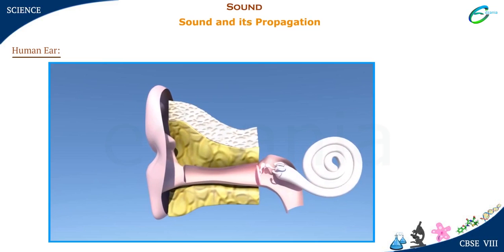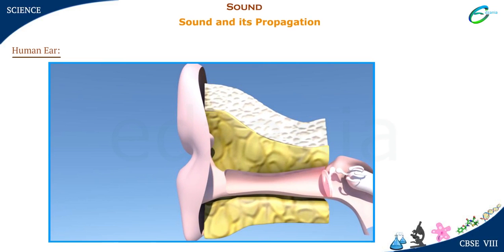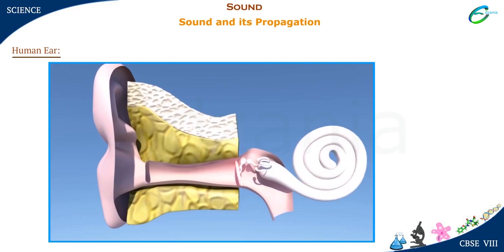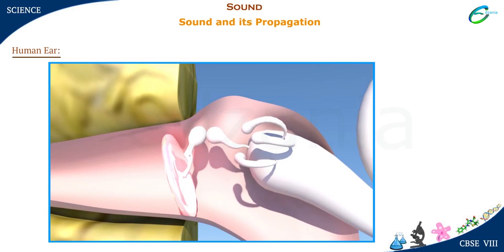The outer part of the ear has a conical shape. It helps in collecting the incoming sounds. Inside it, an ear canal carries the sounds deep inside the ear.